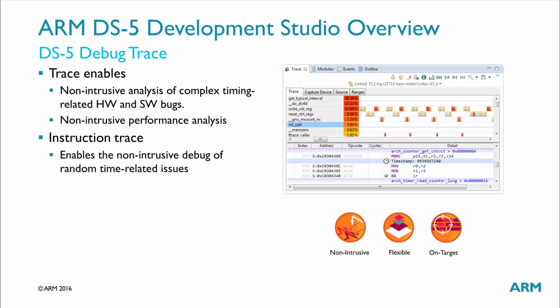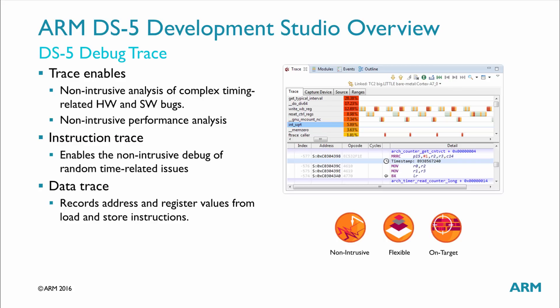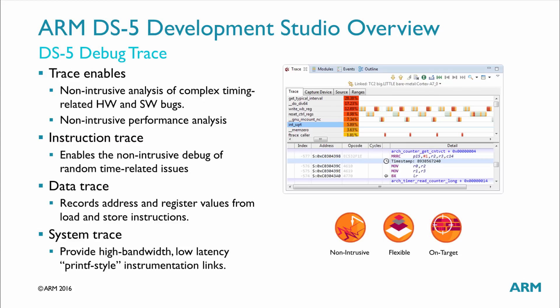Instruction trace: The instruction trace is used to debug random issues that are difficult to replicate by stepping through the code. Data trace: The data trace is used to record address and register values from the load and store instructions, combined with the instruction trace, that gives a complete record of execution. System trace: The system trace provides low-latency printf-style instrumentation links.